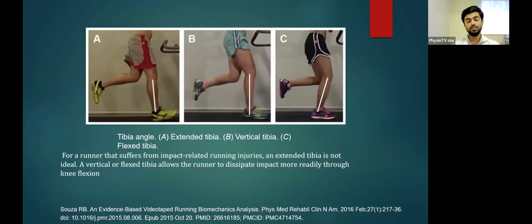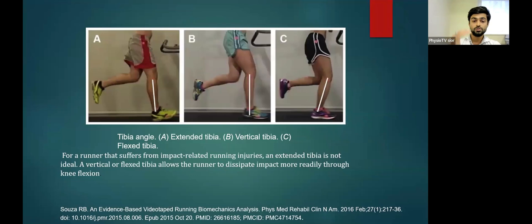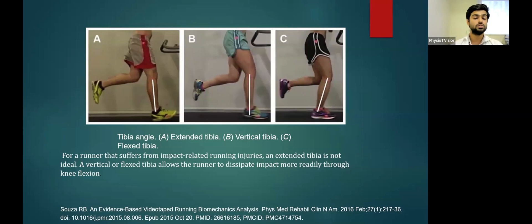The tibial angle is important. There are three tibial angles: extended, vertical, and flexed. For runners suffering from impact-related injuries, the extended tibia is not ideal as it increases ground reaction forces. A vertical or flexed tibia reduces the range of motion needed at the lower extremities, allowing the runner to dissipate impact more readily through knee flexion. The vertical and flexed tibia angle is therefore useful to reduce the risk of stress-related injuries.